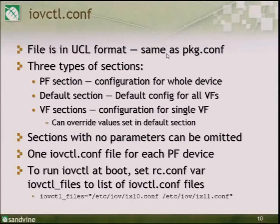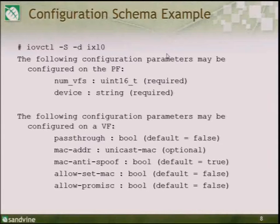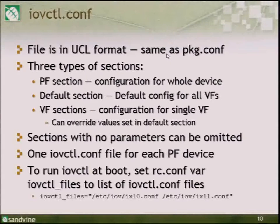The configuration file is in UCL format — the same format used by pkg.conf. It's divided into three sections: the PF section for PF global options, the default section to set default values for all VFs, and per-VF configuration sections which override any default values set in the schema or default section. You don't have to specify a section if it doesn't have any parameters in it.